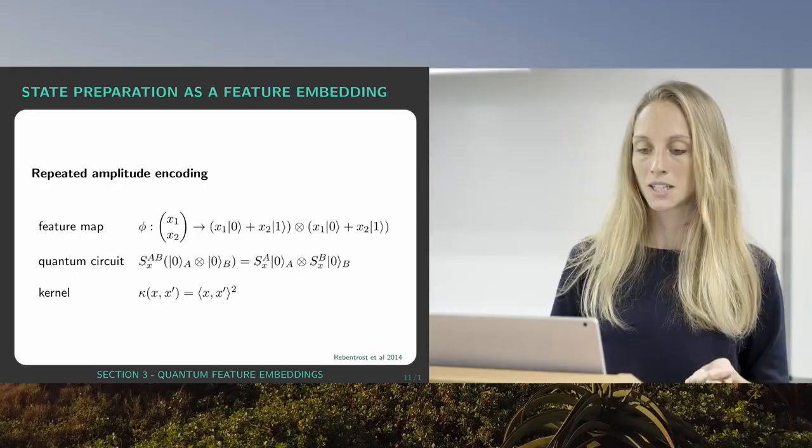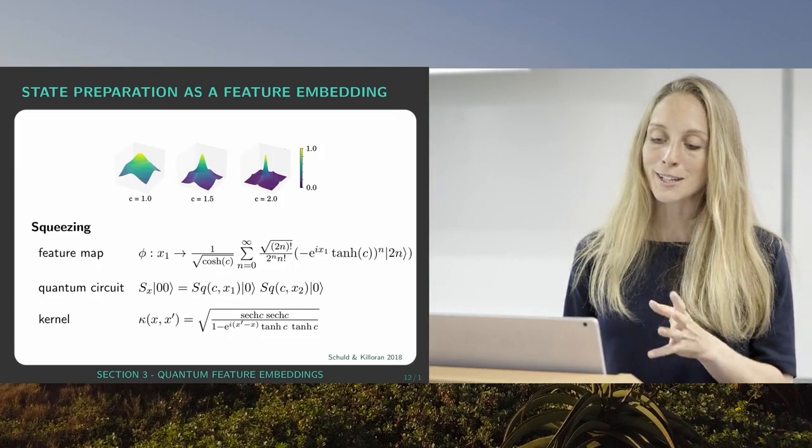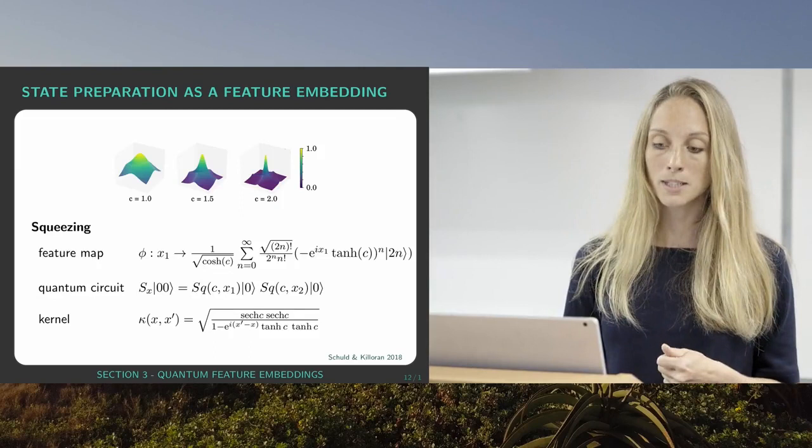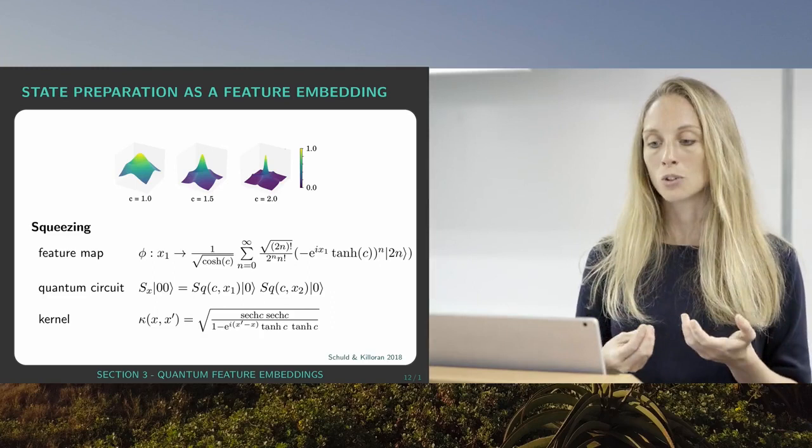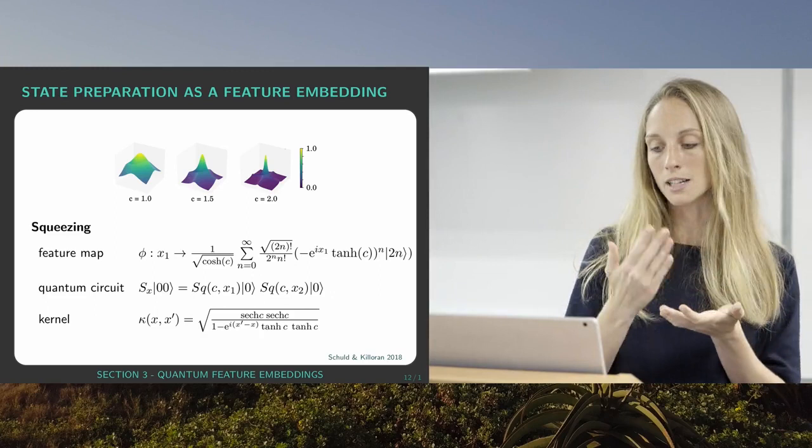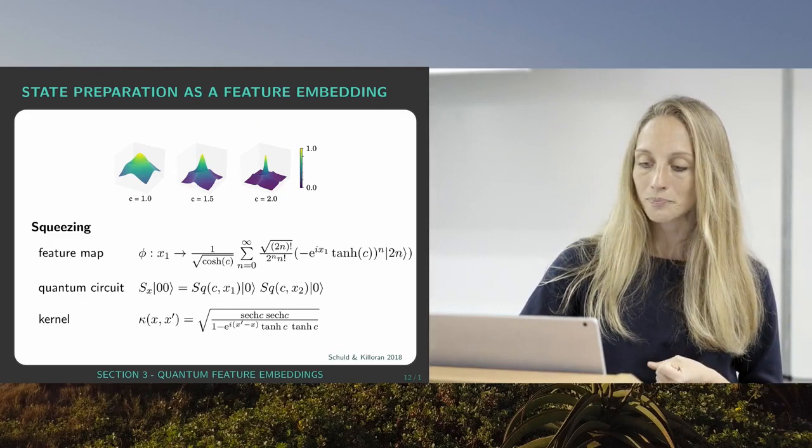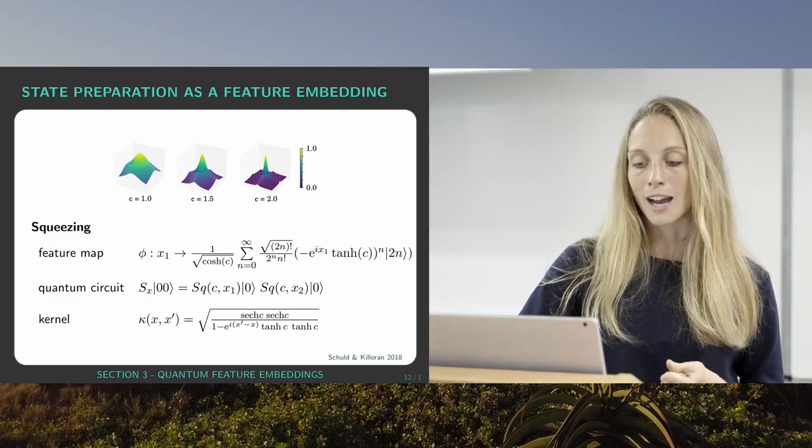And now lastly, just to shock you a bit, we are only in this lecture talking about qubit systems, but you may have learned that there are also continuous variable quantum systems. And for example, a continuous variable quantum system could be quantum optics. So in quantum optics we've got quantum information saved in continuous variables, not only discrete variables like qubits. And in this paper by myself and Nathan Killoran, we have the idea of encoding or doing a kernel with a squeezing feature map.